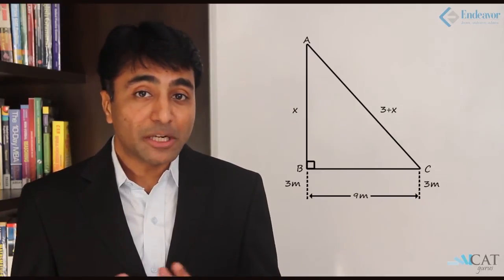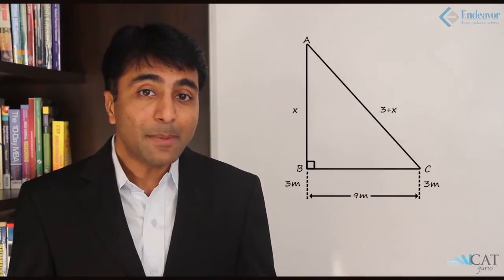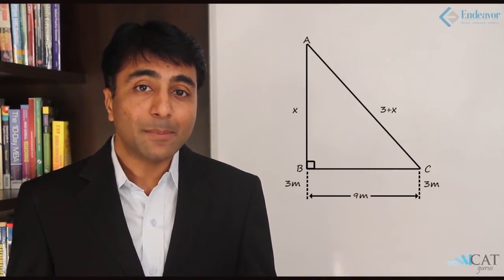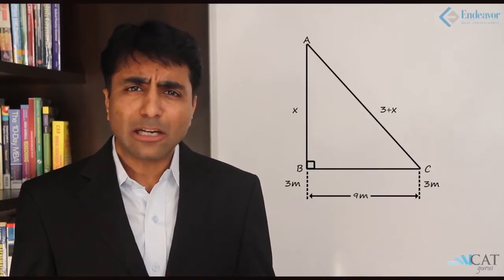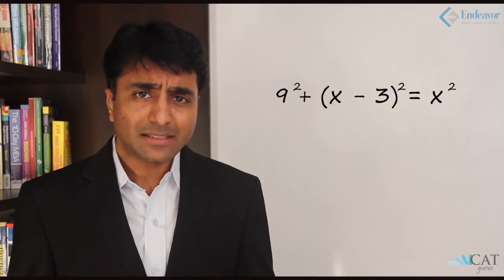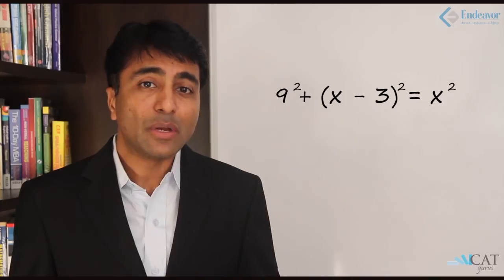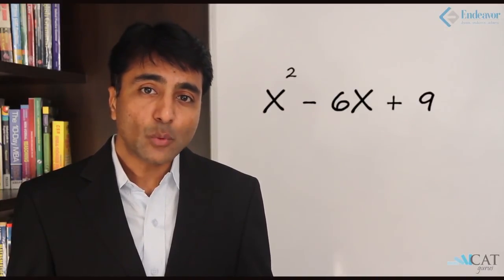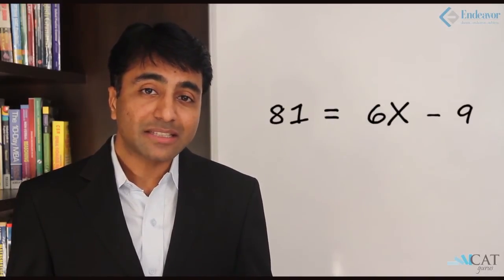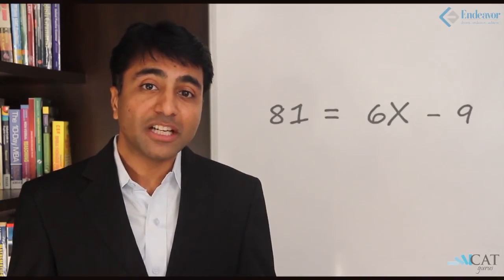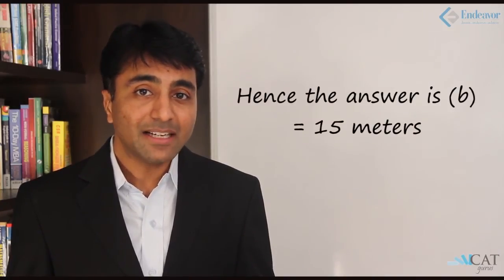Using the Pythagorean triplet, the sides are 9, 12, and 15, so the triplet formed is 9-12-15. Applying Pythagoras' theorem: 9² + (x − 3)² = x². Expanding: 81 + x² − 6x + 9 = x². The x² terms cancel, leaving 81 = 6x − 9, so 90 = 6x, hence x = 15. The length of the wall as well as the length of the ladder is 15 meters.